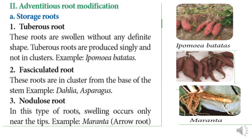Next root is Fasciculated Root. These roots occur in a cluster form. This is a Fasciculated Root, which is different from a Tuberous Root. For example, Dahlia and Asparagus. Asparagus roots are fasciculated.